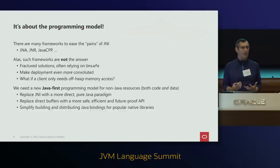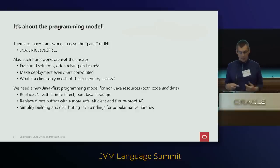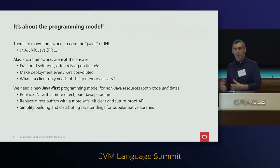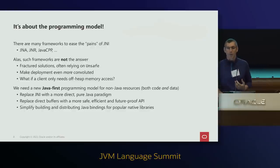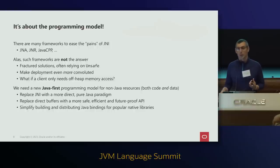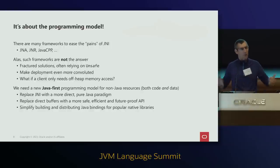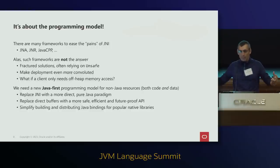What we need is a new programming model — a Java-first programming model, as opposed to JNI's native-first model — that allows us to deal with non-Java resources more naturally. We need to replace JNI with something that lets us talk to native functions directly without any intervening native code. We also want to replace DirectBuffer with a more modern API that accesses the full 64-bit addressing space and supports deterministic deallocation.